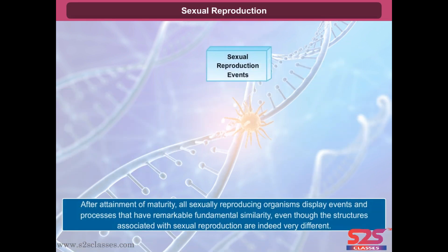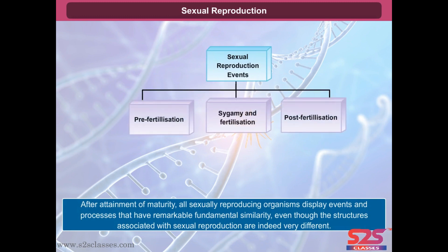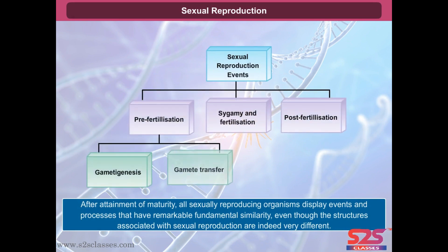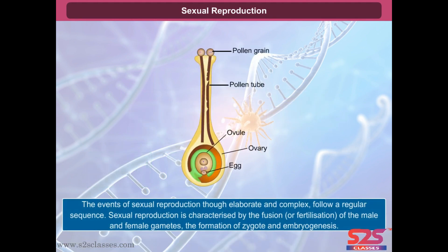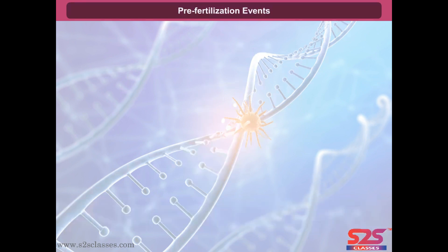After attainment of maturity, all sexually reproducing organisms display events and processes that have remarkable fundamental similarity, even though the structures associated with sexual reproduction are indeed very different. The events of sexual reproduction, though elaborate and complex, follow a regular sequence. Sexual reproduction is characterized by the fusion or fertilization of the male and female gametes, the formation of zygote and embryogenesis.